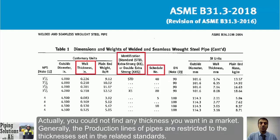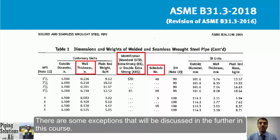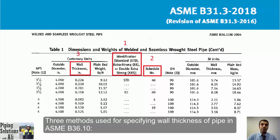You cannot find just any thickness you want on the market. Production lines for pipe are generally restricted to thicknesses set in related standards. Therefore we should order pipe with thicknesses specified in those standards to optimize cost, though there are some exceptions that will be discussed later in this course.